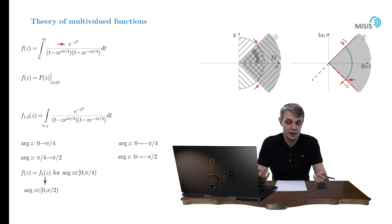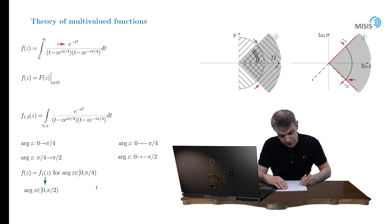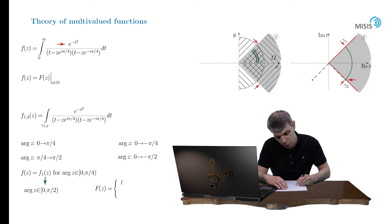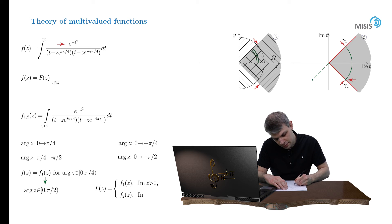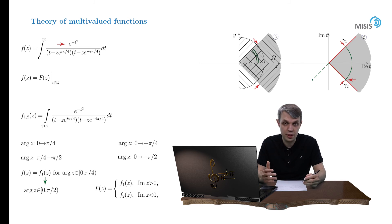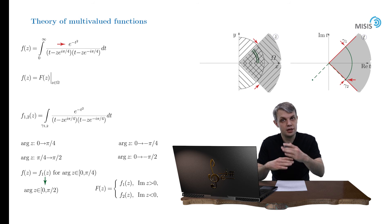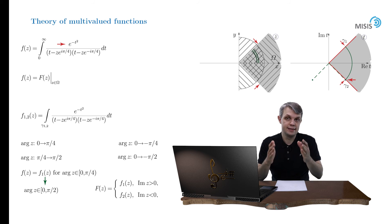Now let's redefine our function F(z) as follows: it equals f1(z) for positive imaginary parts of z, and it equals f2(z) for negative imaginary parts of z. This way we build an analytic continuation of our original function from the corner-type domain Omega into the entire right complex semi-plane.